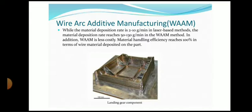Material handling efficiency reaches to 100% in terms of wire material deposition on the part. Here we are depositing the material which is in the form of wire, and we are using an electric source to melt that wire — so we can use 100% of the material with no waste. Whereas in other cases there may be some waste of material. This is also a significant advantage of wire arc additive manufacturing. Here you can see the component which is deposited by this WAAM process.